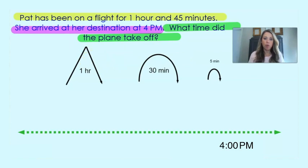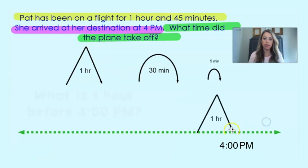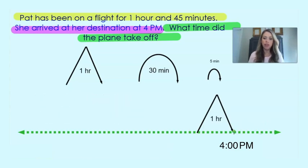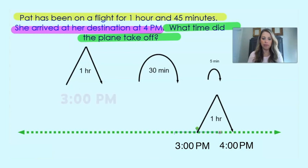So we are going to go ahead and jump 1 hour backwards — 1 hour before 4pm. What time do you think that would be? Good job, that would be 3pm. So we're going to keep track of that on our number line. And then we still have to count for 45 minutes, so I'm going to go ahead and do a 30-minute jump, since that's a little bit easier to think about when counting backwards. 30 minutes before 3pm would be 2:30pm.